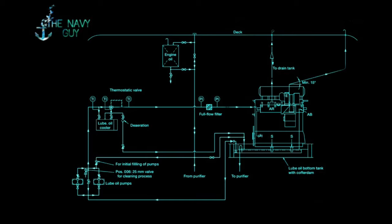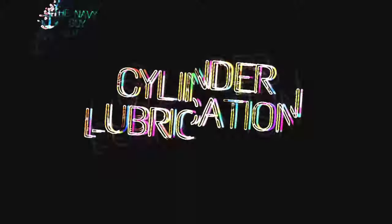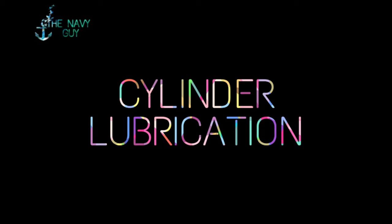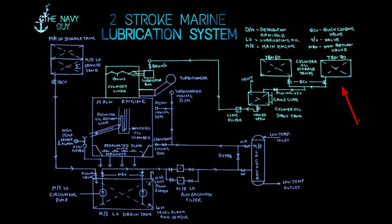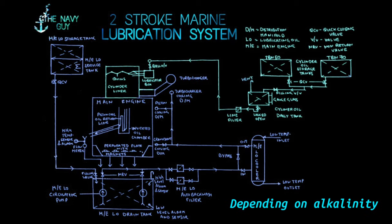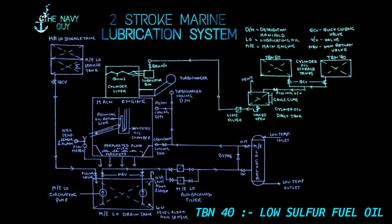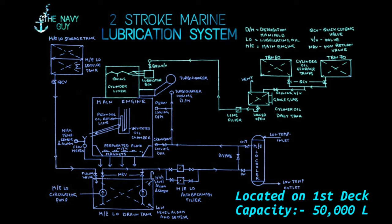That's all for main engine lubrication that an engine cadet must know. Now we will talk about the cylinder lubrication system. The system starts from cylinder oil storage tanks. Cylinder oil is used to nullify the acidic products of combustion and is a requirement of MARPOL Annex 6 on air pollution to reduce sulfur dioxide emissions. There are two tanks depending on alkalinity: one for TBN 40 and another for TBN 70.